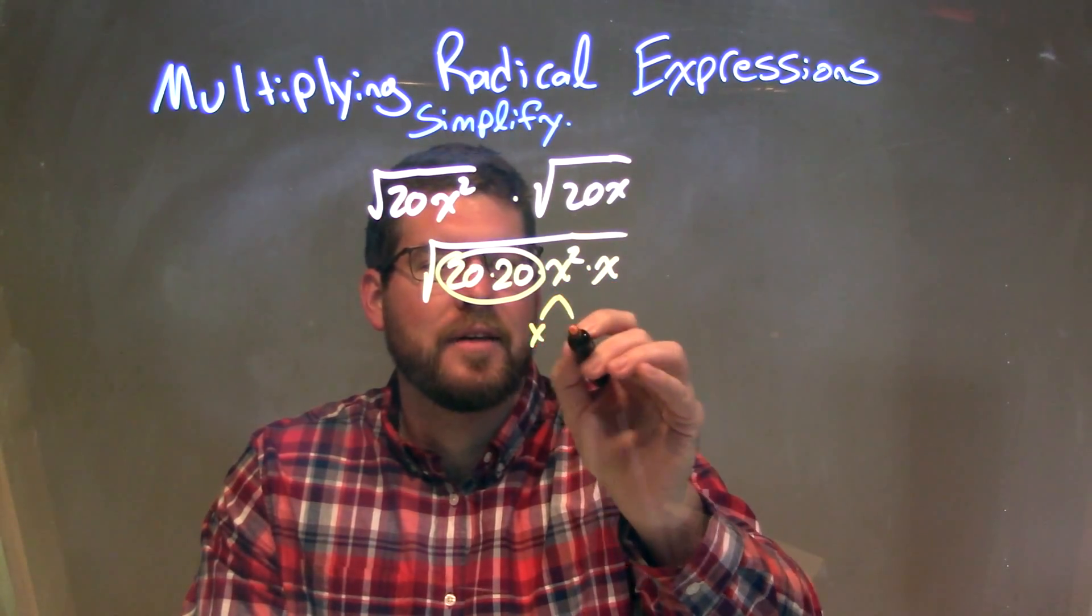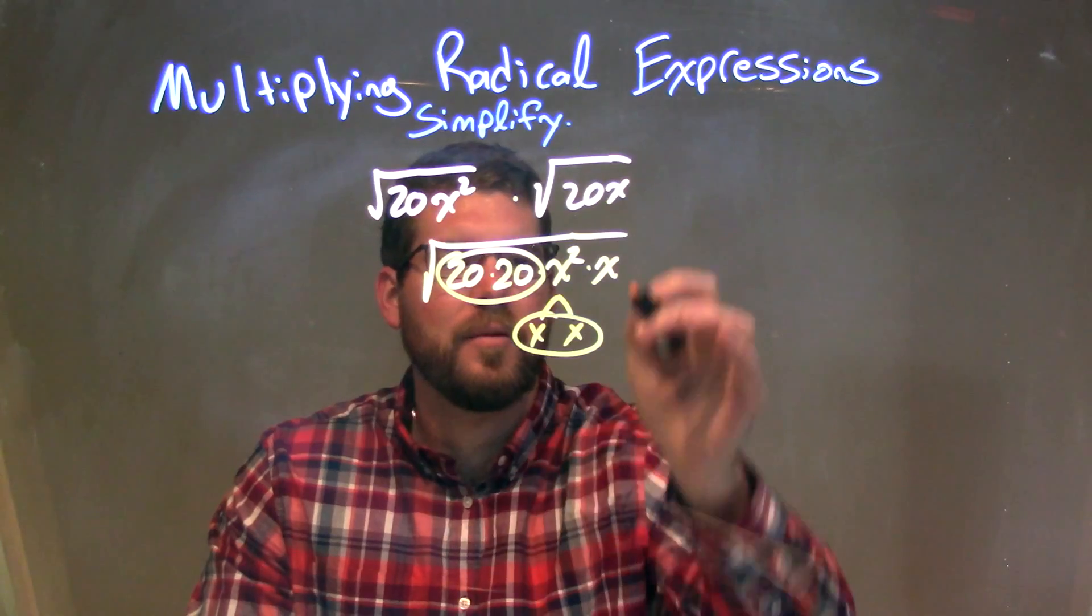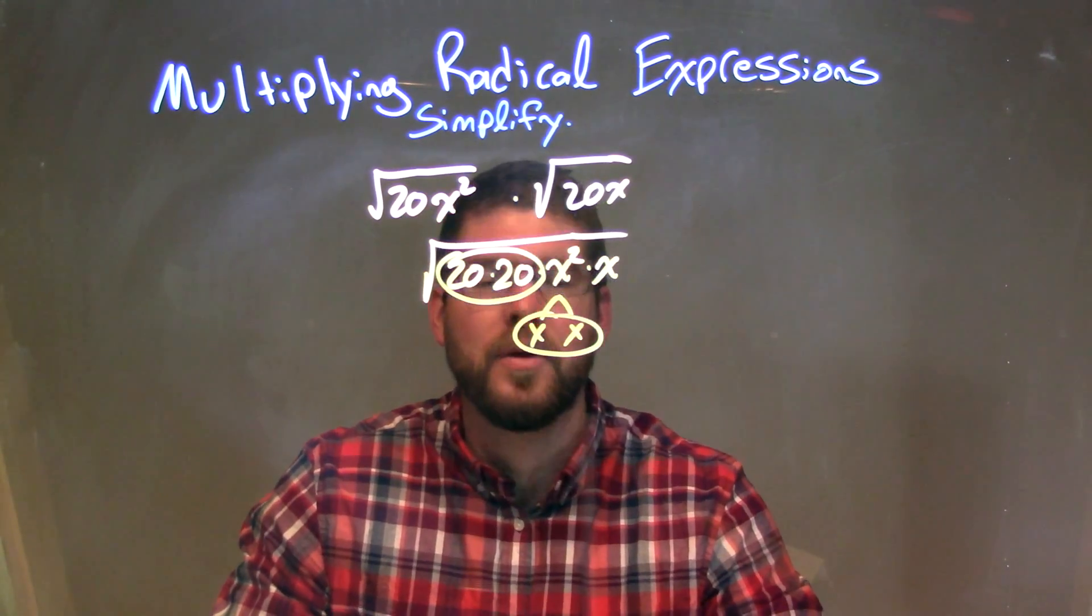x squared breaks down to be x times x. There is a pair, and that one x is just by itself.